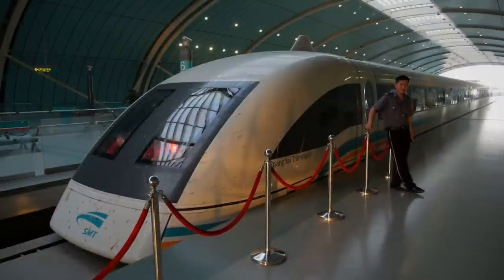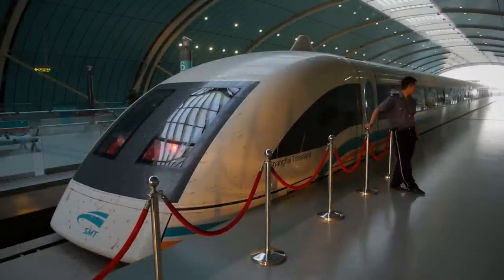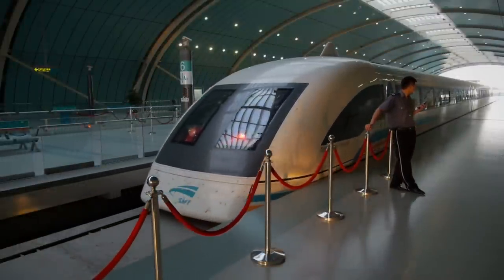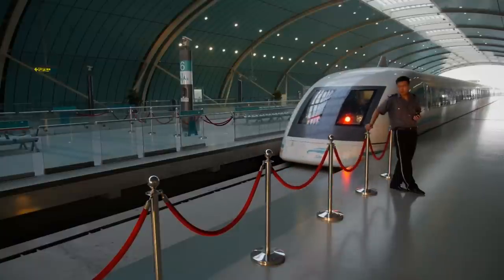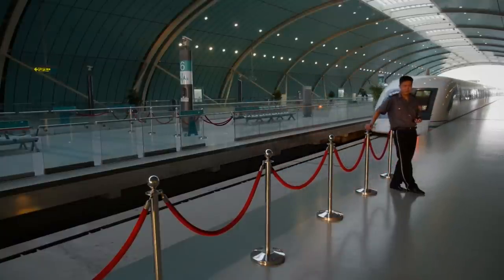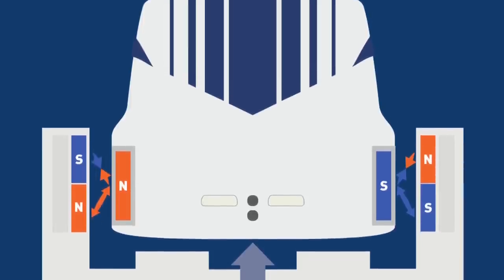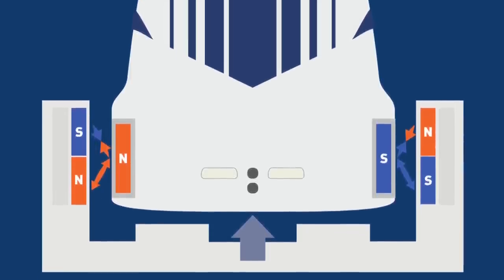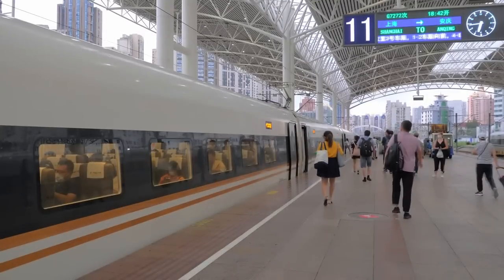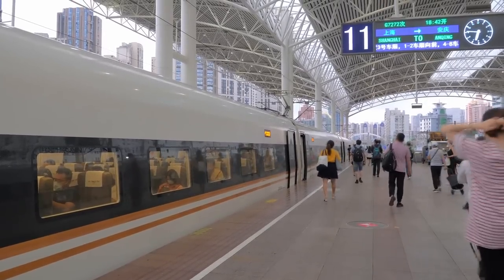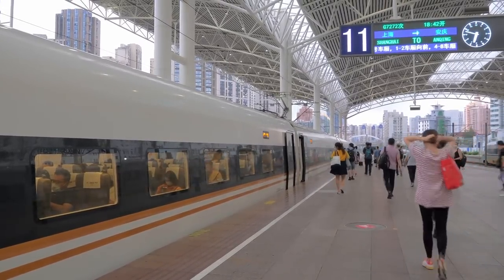To propel the train forward, another set of magnets mounted on the train's underside interacts with the guideway's magnetic fields. By alternating the polarity of these magnets in a controlled manner, a pushing and pulling effect is created, propelling the train along the track at high speeds. This method of propulsion eliminates the need for traditional engines, gears, or mechanical contact, resulting in a frictionless and smooth ride.